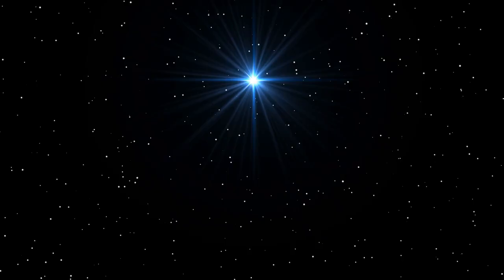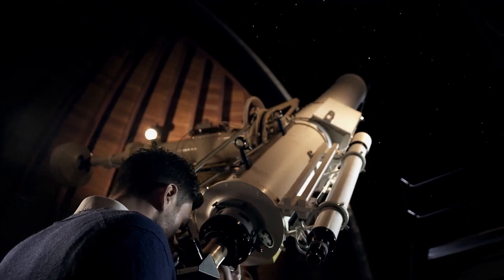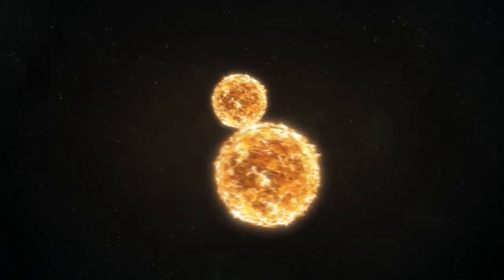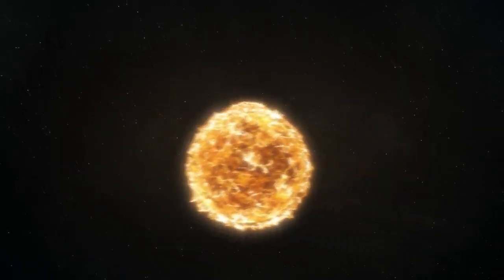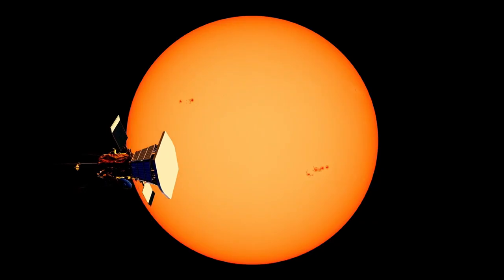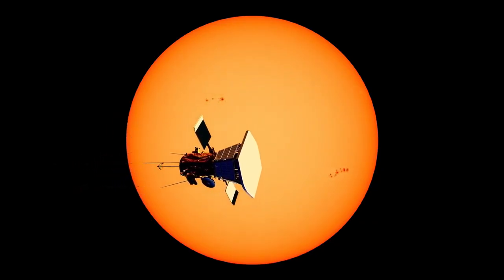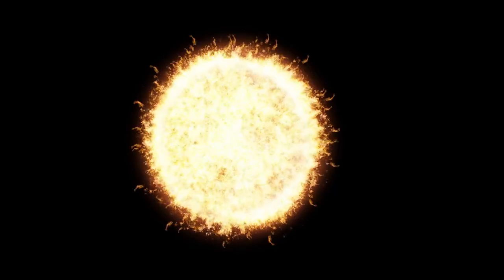Predicting a supernova remains one of the most difficult tasks in astrophysics. The exact moment when a star will explode is nearly impossible to pinpoint. It could happen tomorrow, or it could be 100,000 years from now. Musk's announcement suggests that either he has access to new data or has observed a pattern others have missed. He seems confident that Betelgeuse's recent fluctuations are not random but rather indicative of an impending collapse.